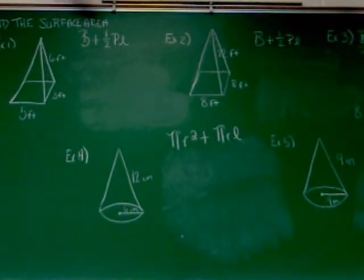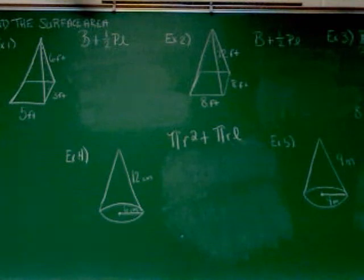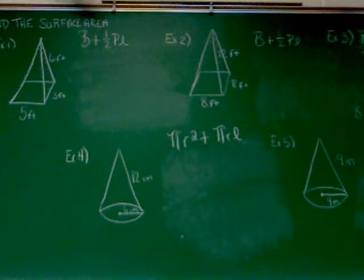We'll start with the pyramids. As you can see, example three gives you a little bit more detail than examples one and two. If the base is something other than a square or rectangle — a four-sided shape — they tend to give you more information because it's harder to find some of those values. So you can expect in the homework that if the base were to be like an octagon, they're going to give you B and P, and the only thing you'll have to figure out is L, the slant height, which should make those problems a little bit more manageable.